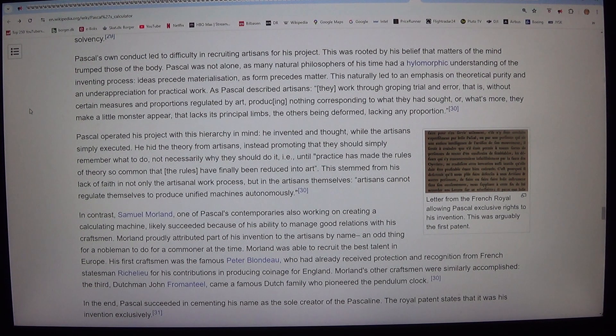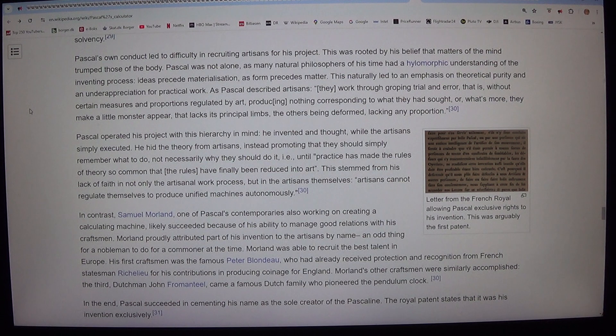Pascal operated his project with this hierarchy in mind. He invented and thought, while the artisans simply executed. He hid the theory from artisans, instead promoting that they should simply remember what to do, not necessarily why they should do it, until practice has made the rules of theory so common that the rules have finally been reduced into art. This stemmed from his lack of faith in not only the artisanal work process, but in the artisans themselves. Artisans cannot regulate themselves to produce unified machines autonomously.